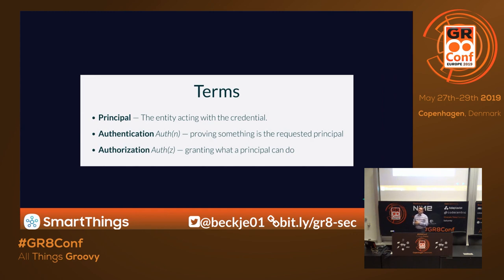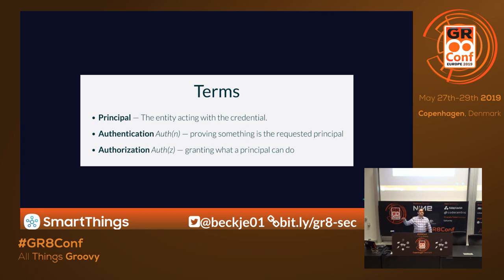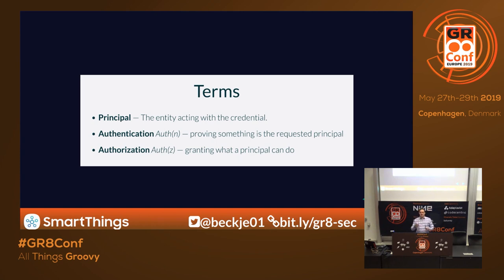Three terms that are a little confusing but basic to everything. The principal is the entity acting with the credential — the thing that's acting. If you're authenticating with a mobile phone, you the user would be the principal. If you have an automation authenticating, that other thing is the principal. Authentication — sometimes abbreviated authn — is proving something is the requested principal: 'I am who I say I am.' Authorization is granting what the principal can do.